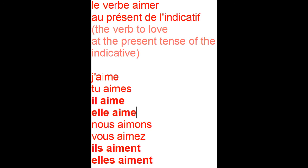'J'aime' — this has an apostrophe, what we call in French 'j apostrophe.' Then 'tu aimes' — be careful, because most of the time, actually all the time, you have an S when it is the second person singular, like 'tu.' So the verb will finish with S: 'tu aimes.'